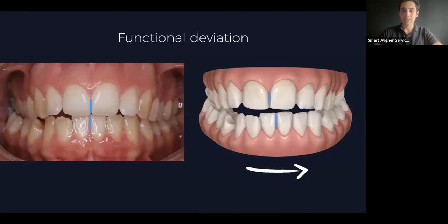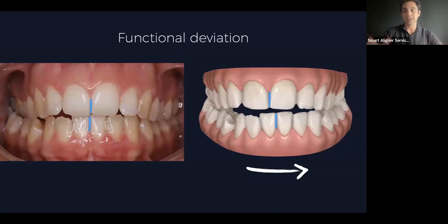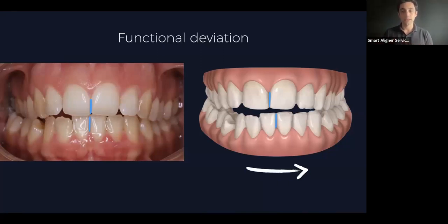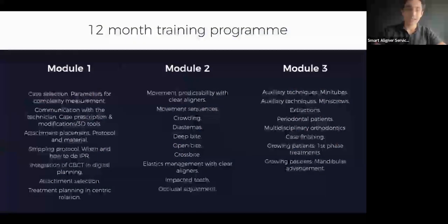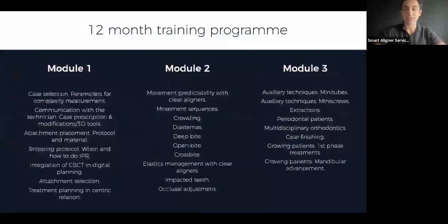This type of deviation must be considered when planning the case. Planning the case in the position of the left picture is completely different from planning it as in the right picture, because that deviation represents the final position of the lower jaw that you want. When we place both arches in that position in the virtual planning, we must take into account that there is an interference that is increasing the vertical dimension of the patient.